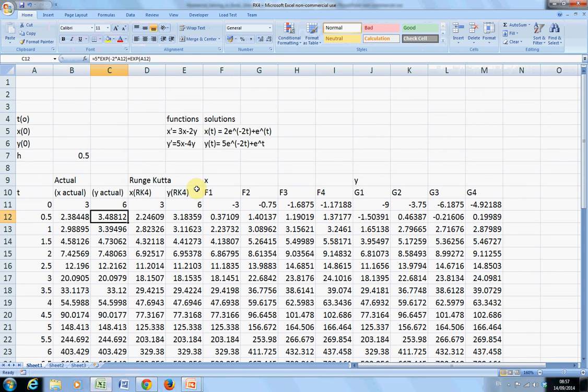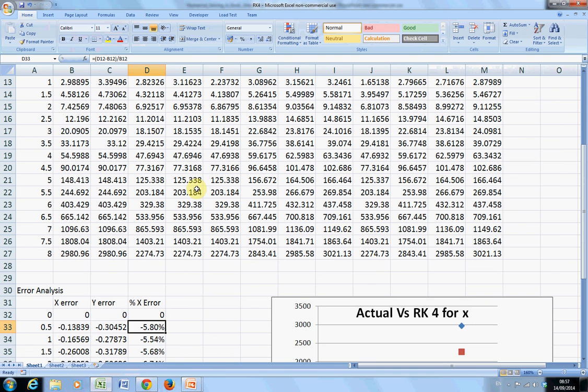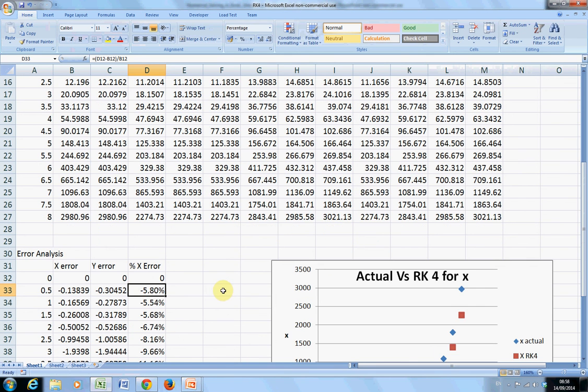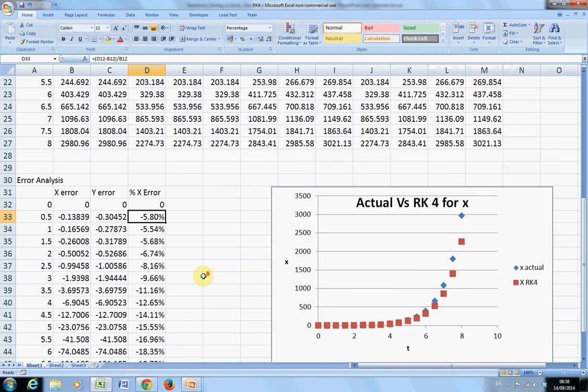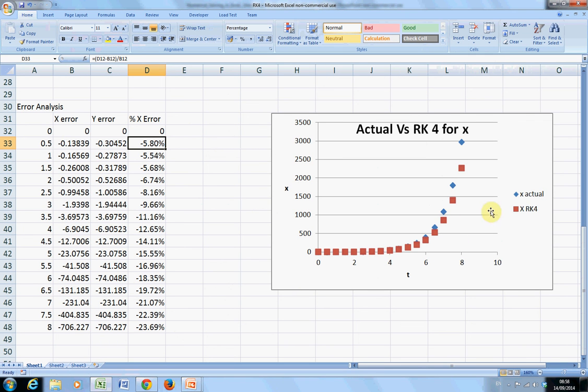And then I get the percentage error. Which is the observed minus the expected over the expected. So that's D12 minus B12 all over B12. And I got a series of plots there. I put in a little legend and I put in a title. And I labelled the x-axis and I labelled the y-axis. I didn't do a graph for the y error. But if you can do it for one, you can do it for both.